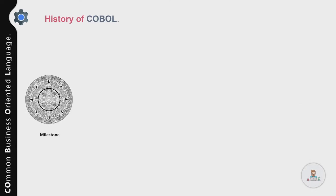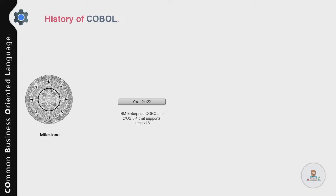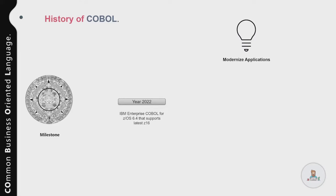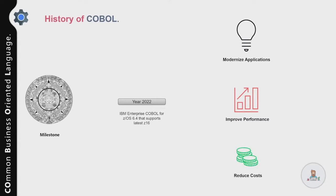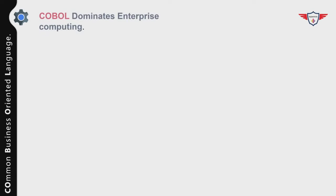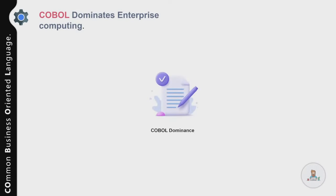The latest version of IBM Enterprise COBOL for z/OS, as of May 2022, is version 6.4, which supports the latest z16 architecture. Enterprise COBOL 6.4 delivers modernization features that improve developer productivity in addition to the performance, modularity, and maintainability of your code, and it also reduces operating costs.